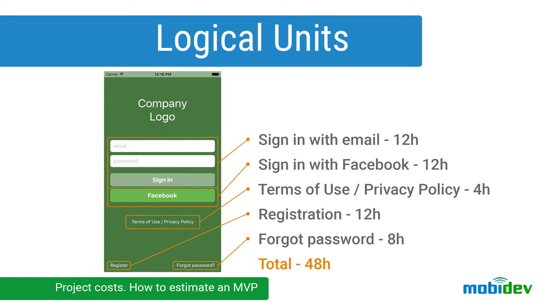Requirements should form logical units which will be evaluated separately. For example, in an application there must be login with email and password as well as Facebook and Twitter — it's reasonable to evaluate them separately. Usually one screen equals one logical unit. Sometimes we can break it further into several units.